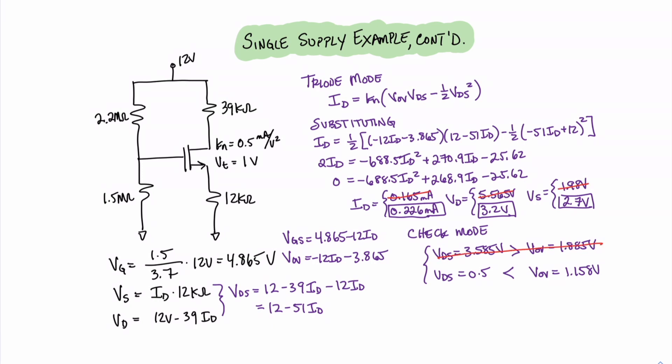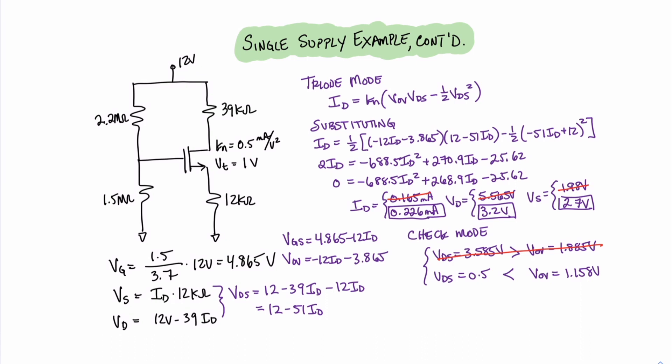And now you can see that solving a circuit in triode mode is very similar to saturation mode in that you have to solve a quadratic equation. However, the quadratic equation is a little bit more complicated to reduce. And that does it for this video of Unwired Learning.